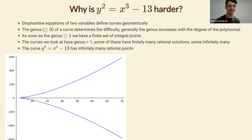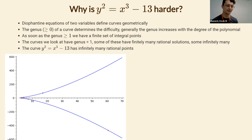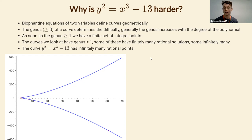The curve y squared equals x cubed minus 13 is the prototypical example of an elliptic curve — a curve of genus one. In many cases elliptic curves have finitely many rational solutions, and in many cases infinitely many; you'd expect to flip a coin to decide. This curve actually has infinitely many rational solutions, which means you can't just find all the rational solutions to find the integral ones.